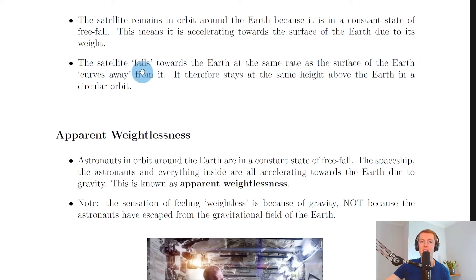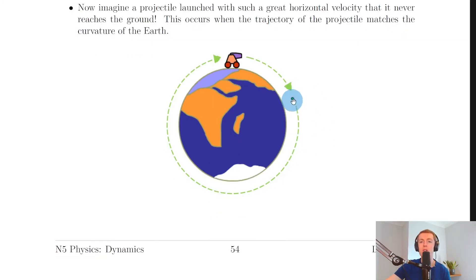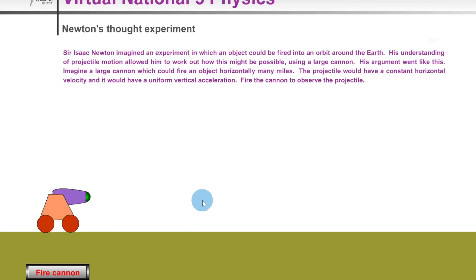The satellite falls towards the Earth at the same rate as the surface of the Earth curves away from it. It therefore stays at the same height above the Earth in a circular orbit. The object is falling towards the Earth at the same rate as Earth is curving away from it, and that will only happen when the horizontal velocity of the projectile is large enough.